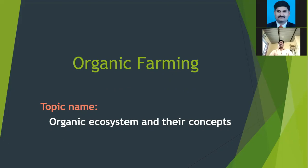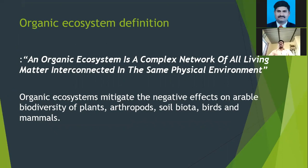An organic ecosystem is a complex network of all living matter interconnected in the same physical environment. The living things and the physical environment, and the interconnections of both, constitute the organic ecosystem. Organic ecosystems mitigate the negative effects on variable biodiversity of plants, arthropods, soil biota, birds, and mammals.